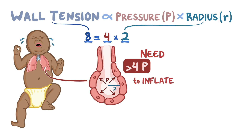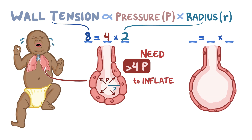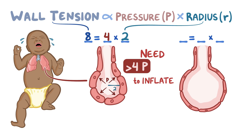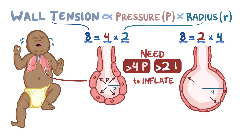Now let's say the alveolus has expanded after the baby took a few breaths and the radius is now 4, with wall tension remaining the same. This time, the baby only needs to breathe in enough air to generate greater than 2 units of pressure to expand the alveolus. So it takes a lot less work.